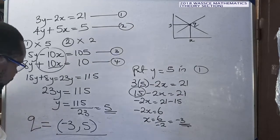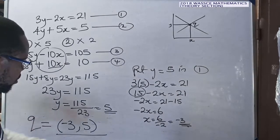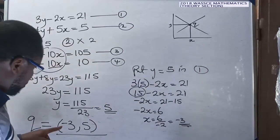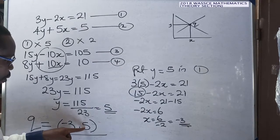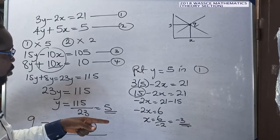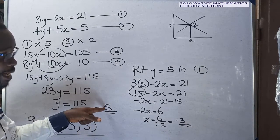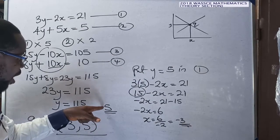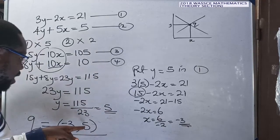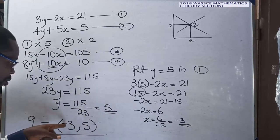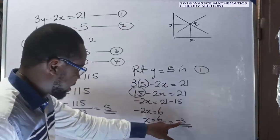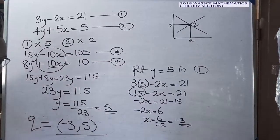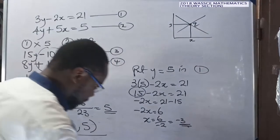So the coordinates of Q are (minus 3, 5). Remember you must place x before y. In coordinate geometry, x comes before y, so the answer is (−3, 5).